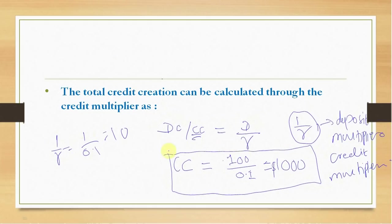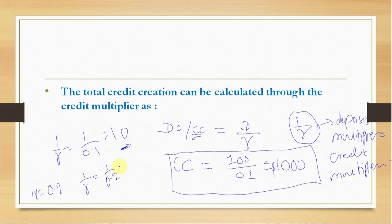Here, 1/r is 1/0.1, which equals 10. So the credit creation will be 10 times the original deposit, giving $1,000. Now if r equals 20%, then 1/r is 1/0.2, which equals 5, giving $500 in credit creation. And if the cash reserve ratio were 5%, the multiplier would be 20, giving $2,000 in credit creation. This value 1/r is called the credit multiplier.